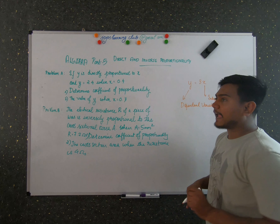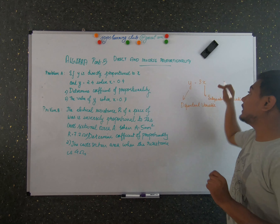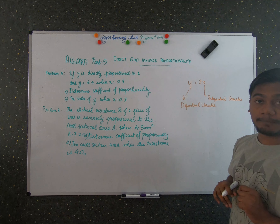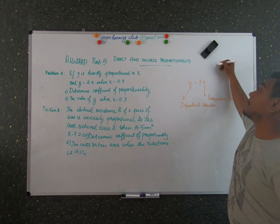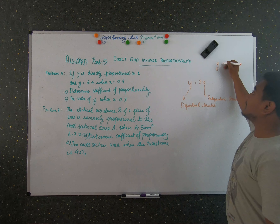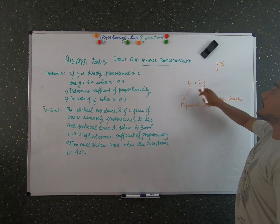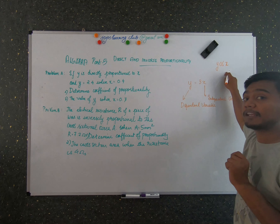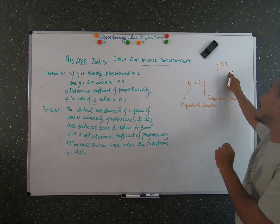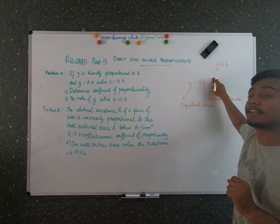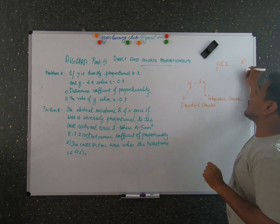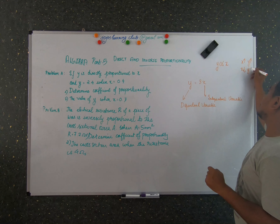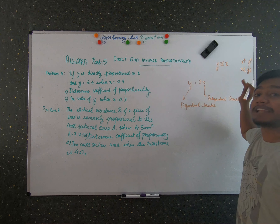So you can say that whenever there is an increase or decrease in the independent variable, there is also a corresponding decrease or increase in the dependent variable. So for a direct proportion, the proportionality sign shows that y is directly proportional to x. Whenever x increases, the value of y increases. When the value of x decreases, the value of y decreases. This is what a direct proportion is.